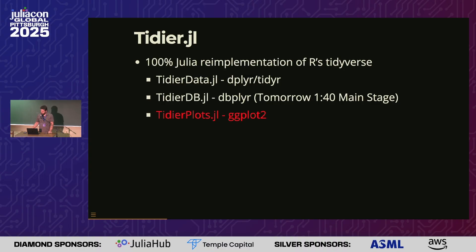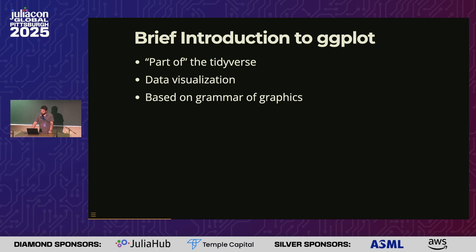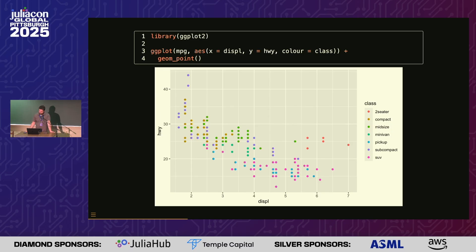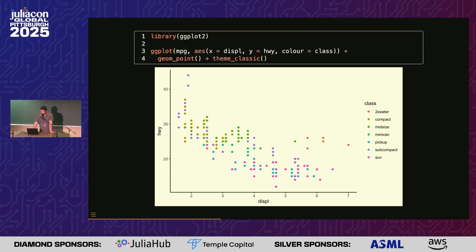TidierDB for database interfaces, which you can see more about tomorrow on the main stage at 1:40. This talk is about TidierPlots.jl, which is the ggplot2 implementation. ggplot, depending on who you ask, is part of the Tidyverse — it's a package for data visualization. The general idea of ggplot is that we map parts of our data to aesthetics to create data visualizations. You build these up by adding layers together. Here's an example of a very simple ggplot that takes the dataset MPG, maps some of its columns to aesthetics, and says map those as points.